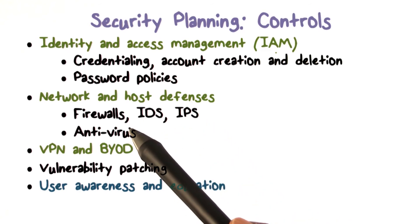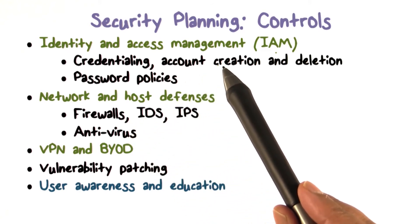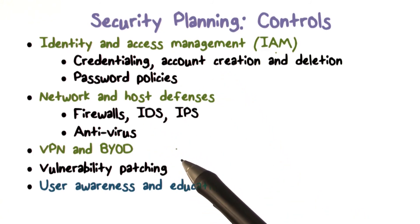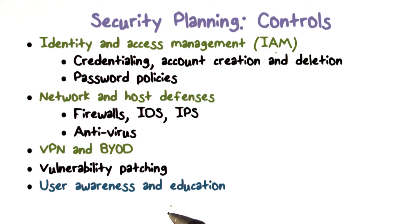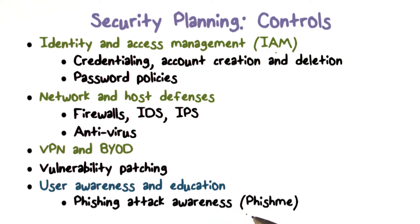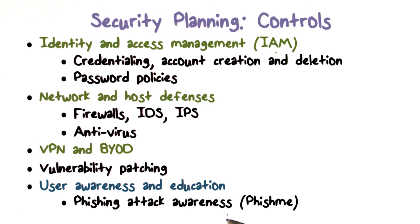When we talk about controls, we're often talking about technological controls — things like password management, identity management, and firewalls. But another control is how we educate our users. For example, some companies run periodic training so employees don't fall for phishing attacks. They may send a simulated phishing email, and if you fall for it, it's used to train and educate you that you shouldn't be falling for those kinds of things.